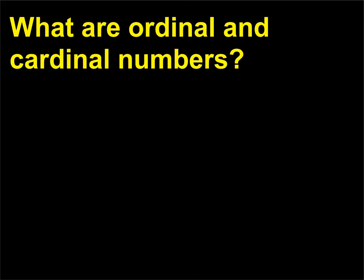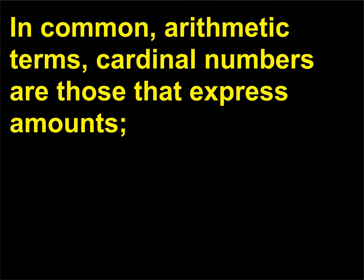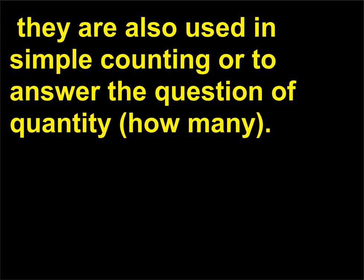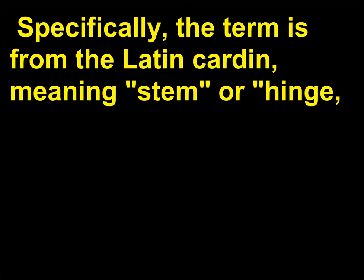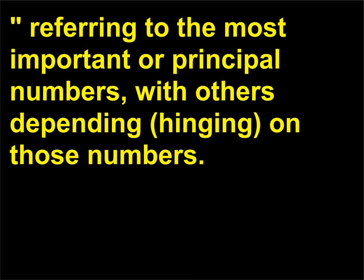What are ordinal and cardinal numbers? In common arithmetic terms, cardinal numbers are those that express amounts. They are also used in simple counting or to answer the question of quantity — how many. They can be nouns (try counting to 10), as pronouns (10 were discovered), or adjectives (10 cats). Specifically, the term is from the Latin cardo, meaning stem or hinge, referring to the most important or principal numbers, with others depending, or hinging, on those numbers.